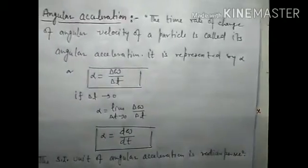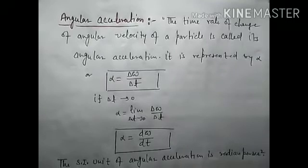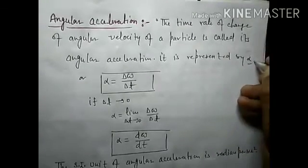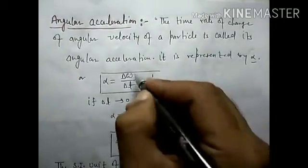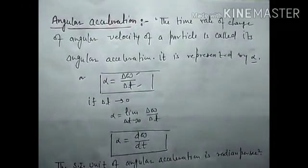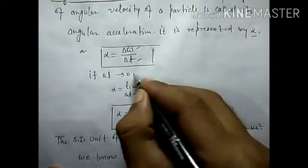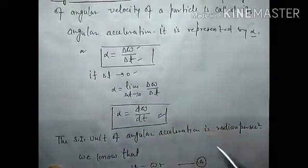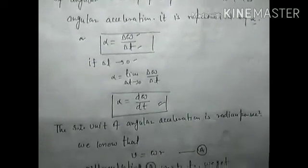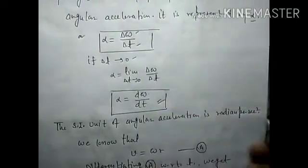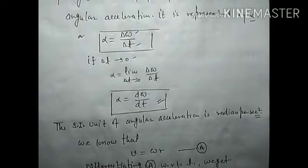अब angular acceleration की बात करते हैं। जैसे simple (linear) acceleration है वैसे angular acceleration होगा — it is the time rate of change of angular velocity of a particle. It is represented by α, and α = Δω / Δt. For instantaneous angular acceleration: α = limit (Δt→0) Δω/Δt = dω/dt. SI unit of angular acceleration is radian per second squared (rad/s²).